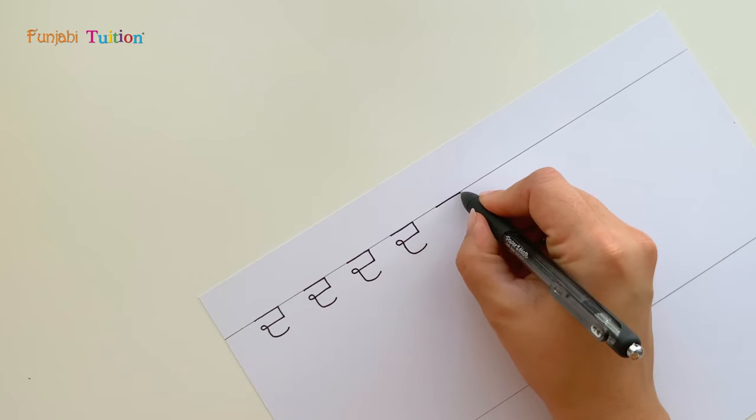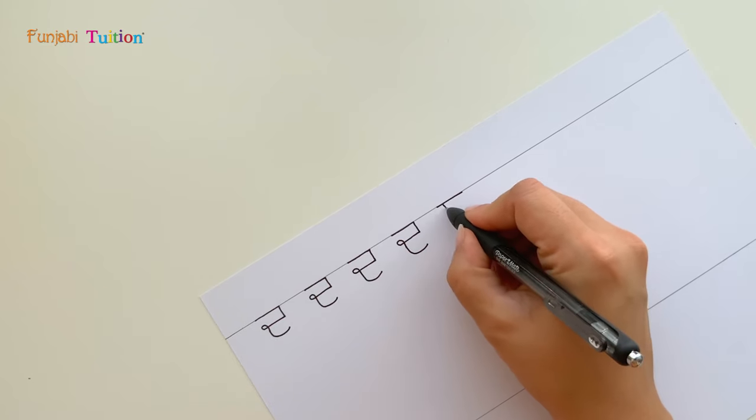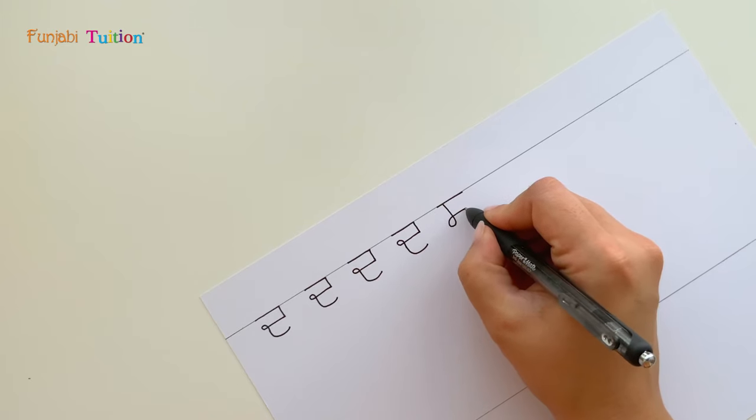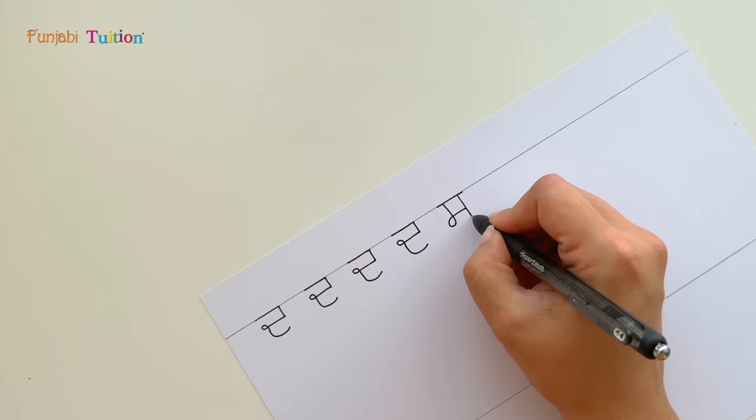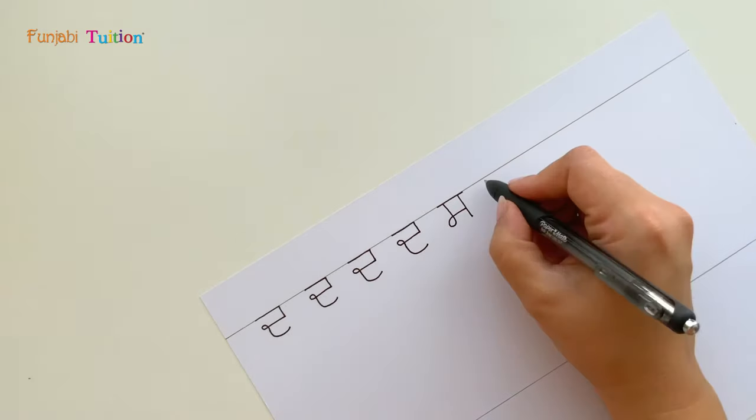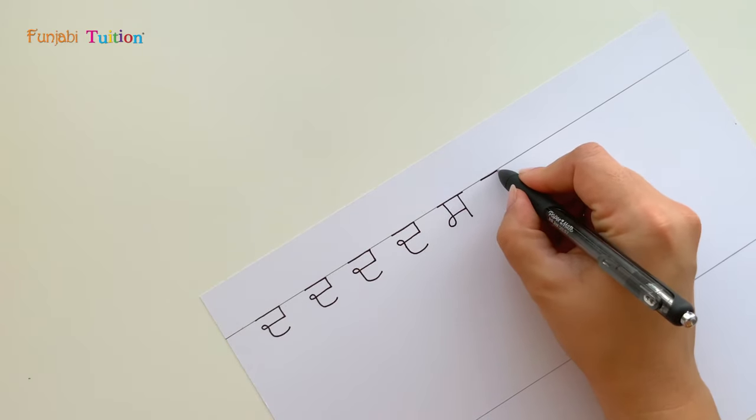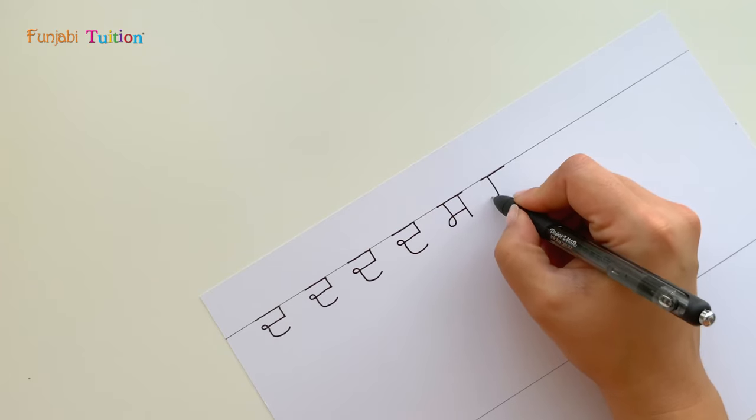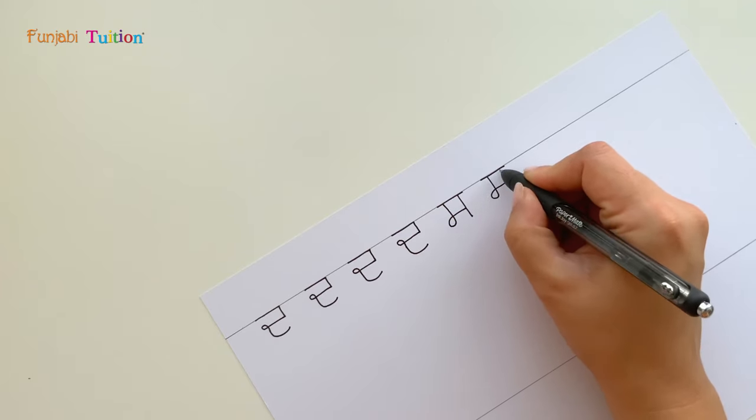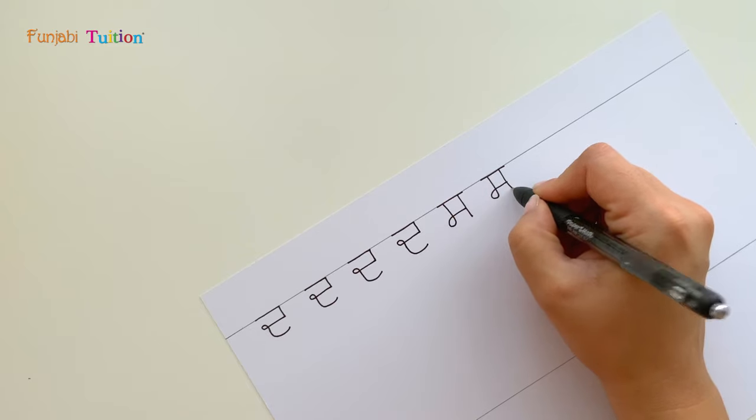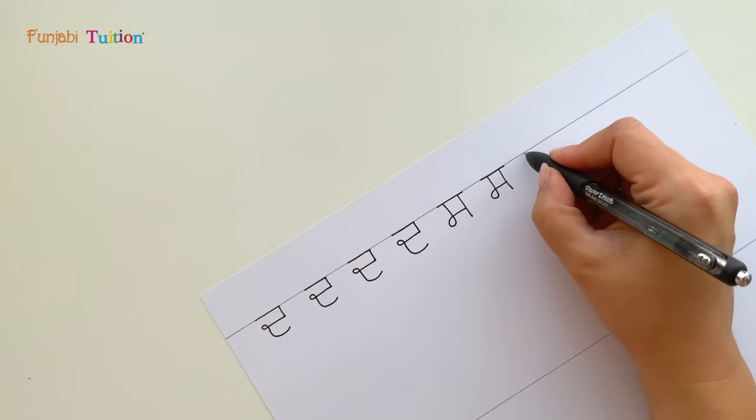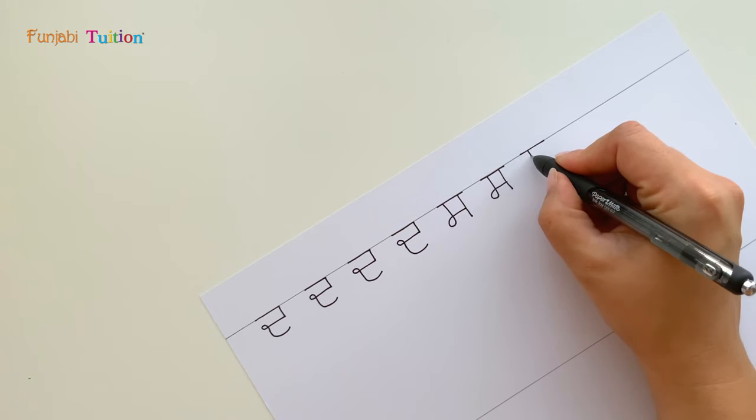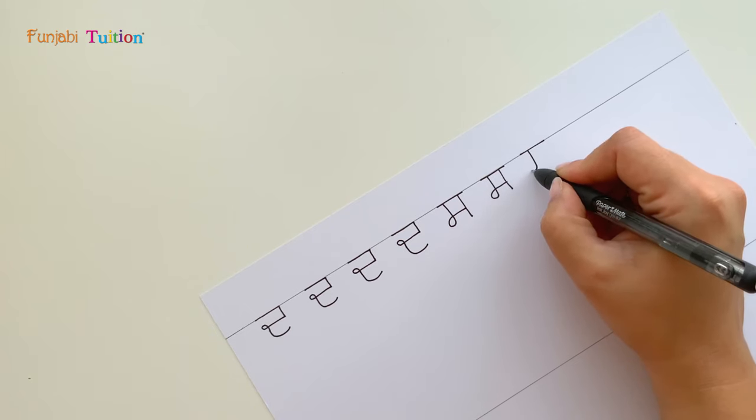And then we stroke down, across, down and we loop and across and we go down. Now while you practice your second two I just want to let you know this is my preferred method of creating the letters. Lots of people have different other ways as well and as long as we get the end result it's all fantastic.